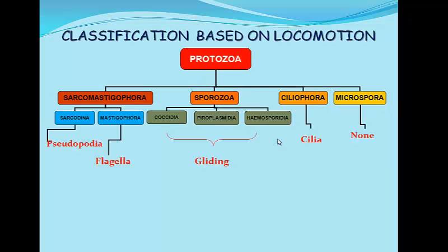This diagram shows an addition to the first one. We can now see that each class is divided based on locomotion. The class Sarcodina uses pseudopodia, while Mastigophora uses flagella. The classes Coccidia, Pyroplasmidia and Hemosporidia use gliding for locomotion, while Ciliophora uses cilia, and Microspora uses none.